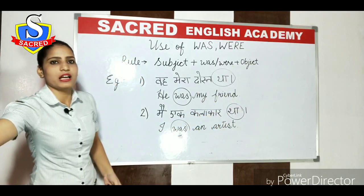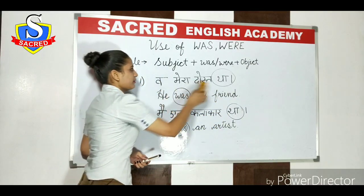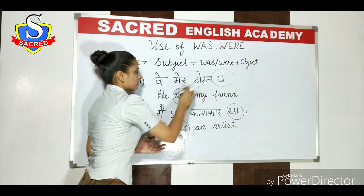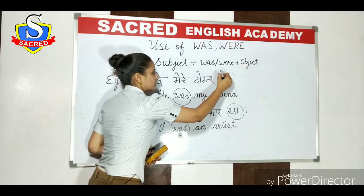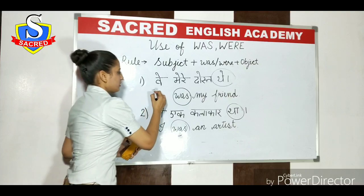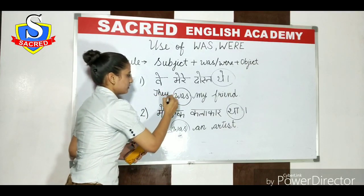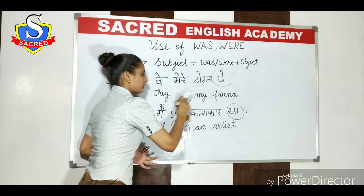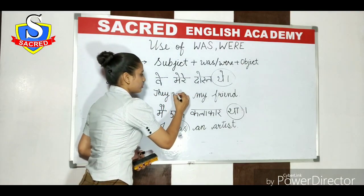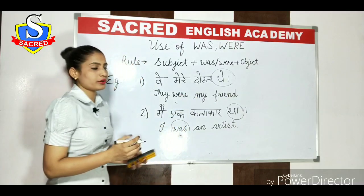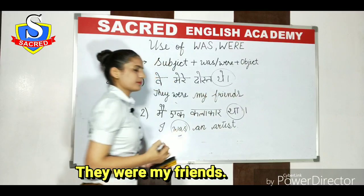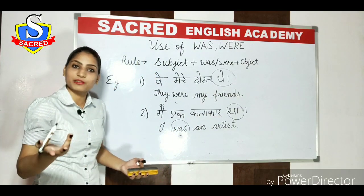So how can you write it? Agar hum isko change karte hain — 'Woh mere dost the.' You can say: 'They were my friends.' As I told you, jab hum plurality ki baat karte hain, plural cheez ki baat karte hain, to you have to write 'were'. 'Friend' ke saath humne 's' laga diya hai, which means it's plural.